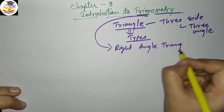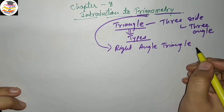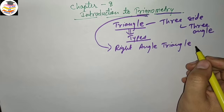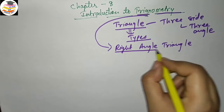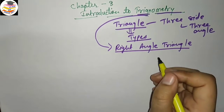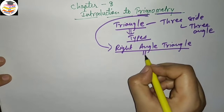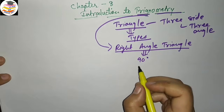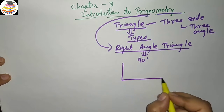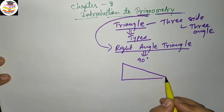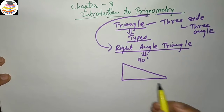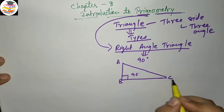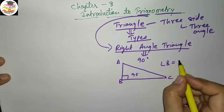What is a Right Angle Triangle? It is a triangle where one angle is 90 degrees. If you see a triangle like this with vertices A, B, and C, then angle B is equal to 90 degrees. That makes it a Right Angle Triangle.